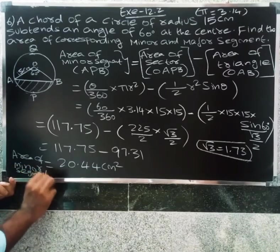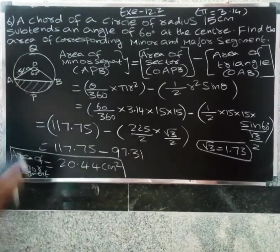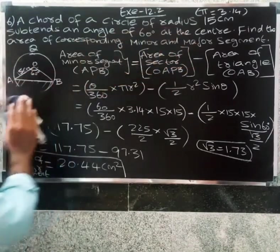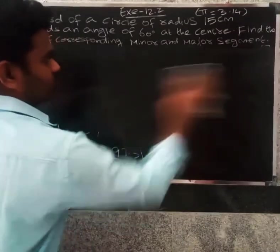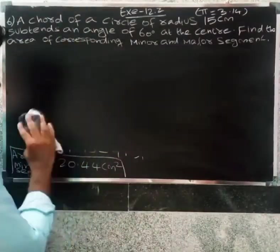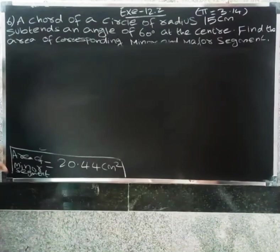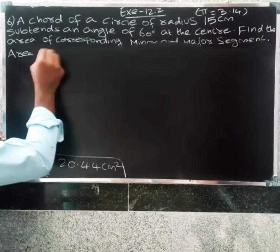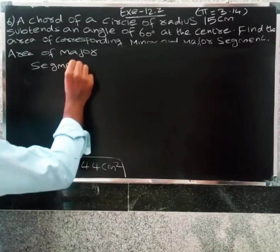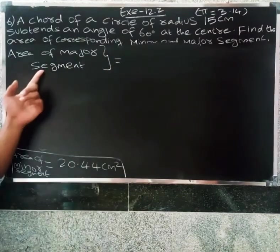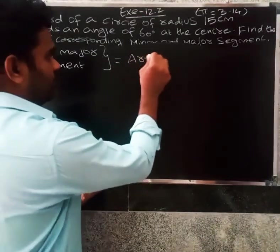Area of major segment: total area of major segment equals total area of circle minus area of minor segment.